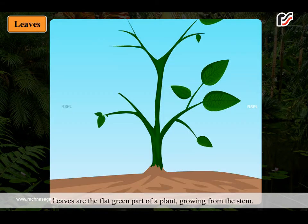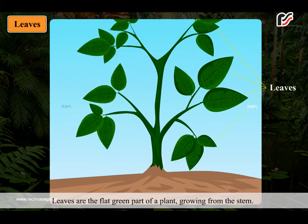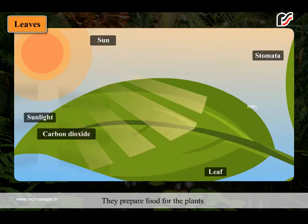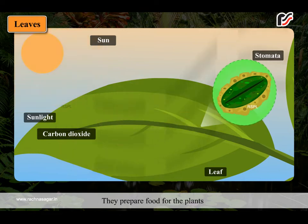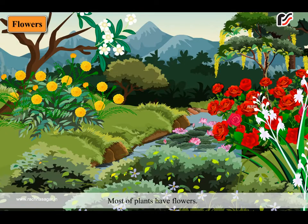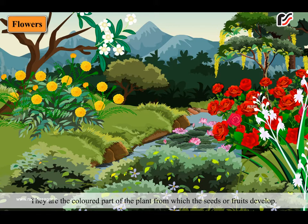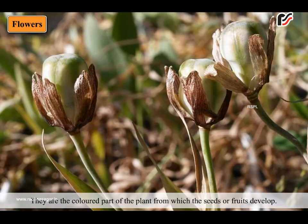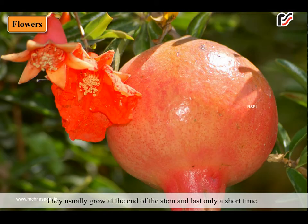Leaves are the flat green part of a plant growing from the stem. They prepare food for the plants. Most plants have flowers. They are the colored part of the plant from which the seeds or fruits develop. They usually grow at the end of the stem and last only a short time.